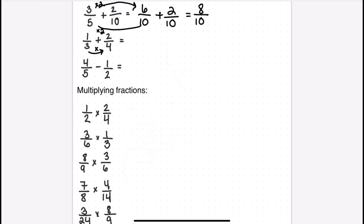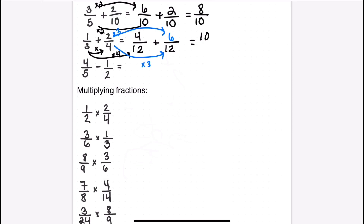Next, I don't have a common denominator and can't easily convert a denominator of three to a denominator of four, so I multiply those two numbers together: three times four equals twelve. To make the numerators equivalent, I multiply the first side by four and the second side by three — one times four is four, and two times three is six. Then I add straight across to get ten over twelve, which reduces to five over six.